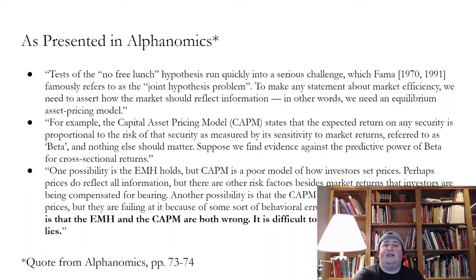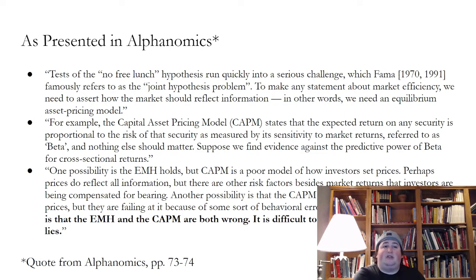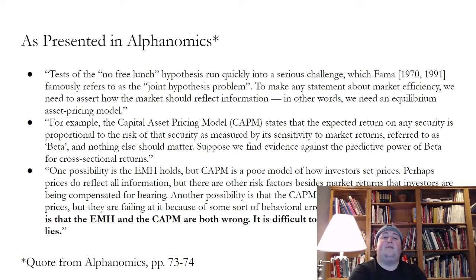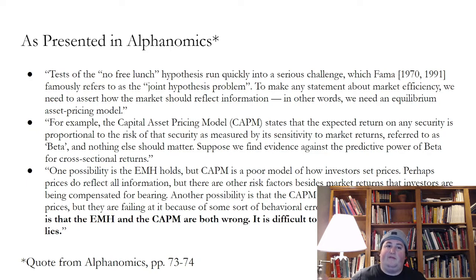Suppose we find evidence against the predictive power of beta for cross-sectional returns. One possibility is the EMH holds, but CAPM is a poor model of how investors set prices. Perhaps prices do reflect all information, but there are other risk factors besides market returns that investors are being compensated for bearing. Another possibility is that CAPM is in fact how investors should set prices, but they're failing at it because of some sort of behavioral error or bias. Yet a third possibility is that both the EMH and CAPM are wrong, and it is difficult to sort out where the problem lies.